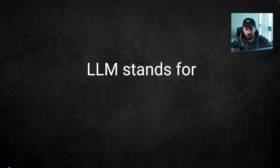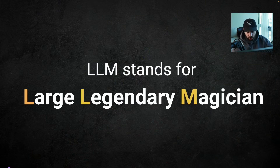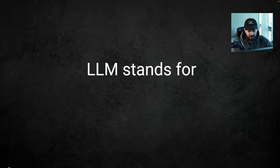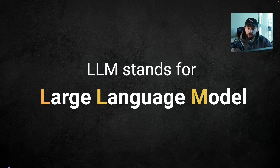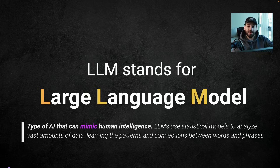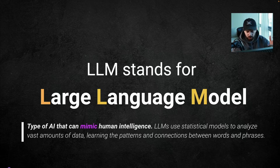LLM stands for Large Language Model — not 'large legendary magician,' obviously. It's basically a type of AI that mimics human intelligence. It doesn't really think like a human, but it tries to mimic the way humans communicate using statistical models based on the data it was trained on.